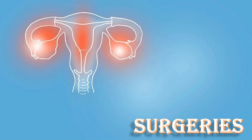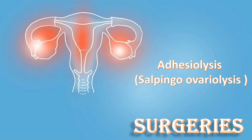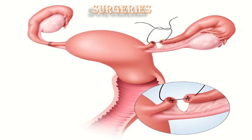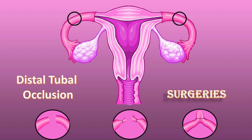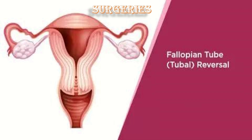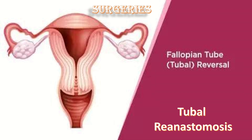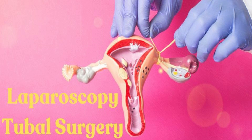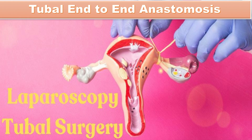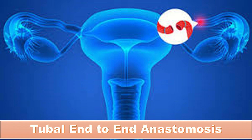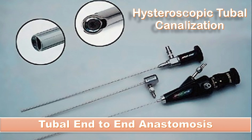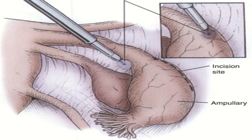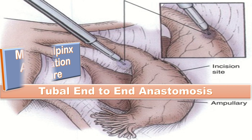The different surgical approaches for tubal anastomosis are: first, laparotomy microsurgical technique; second, laparoscopy or pelviscopy; and third, transcervical tubal recanalization. The types of surgeries performed include adhesiolysis or salpingo-ovariolysis. In proximal tubal occlusion, we perform tubal cornual re-anastomosis; in distal tubal occlusion, we perform fimbrioplasty. The most commonly used technique is tubal re-anastomosis — tubal end-to-end anastomosis performed laparoscopically or via slice resection of the occluded tubal area.